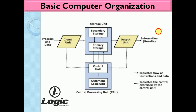Now we see the diagram — this is the basic organization of computer systems. There are a number of units: input units, central processing unit, and output units. We will look at each one by one.